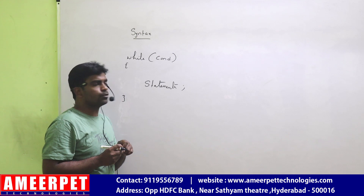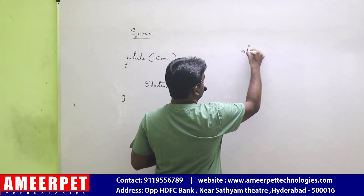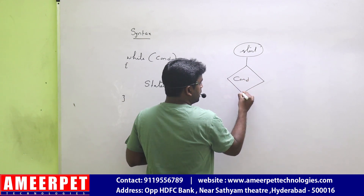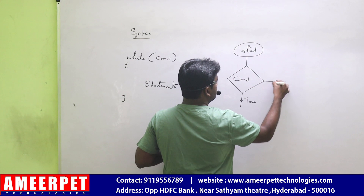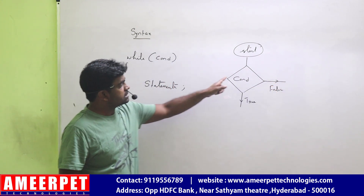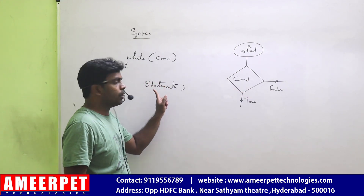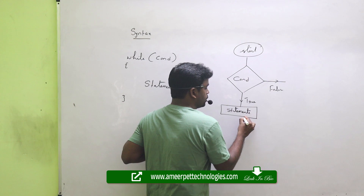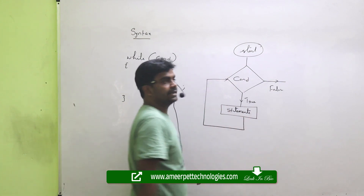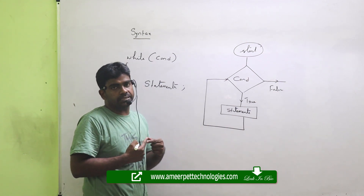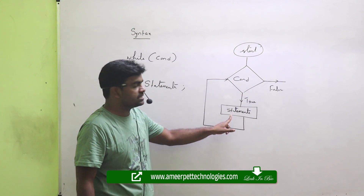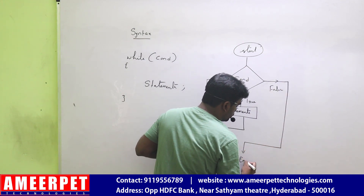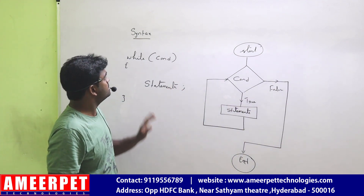The block executes until this condition is valid. With the flow you can understand: we start, check the condition — we have two options. If the condition is valid, the block gets executed; all statements execute. After execution, it will iterate again and check the condition. If the condition is valid again, statements execute, and this continues until it is false. When it is false, it will go to end.